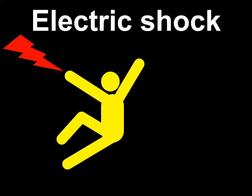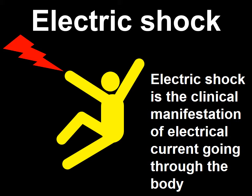So we must start by defining what we want to avoid. This frame has a red lightning bolt representing incoming electricity and a yellow figurine depicting a person. This cartoon — the red lightning bolt and the yellow figurine — will be used during this talk as a symbol for electric shock. The definition of an electric shock is straightforward: an electric shock is the clinical manifestation of electrical current going through the body.